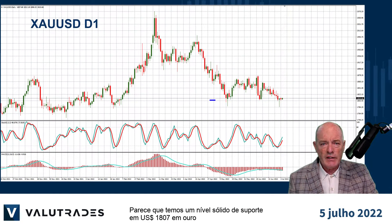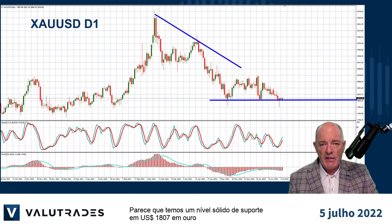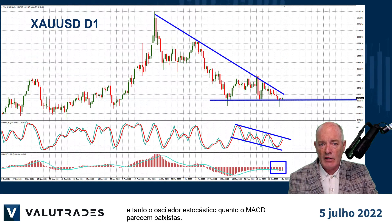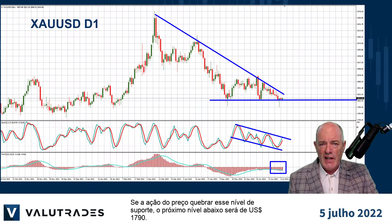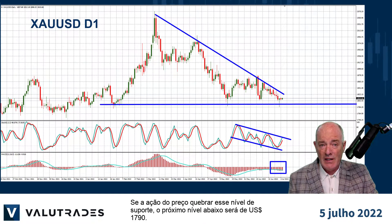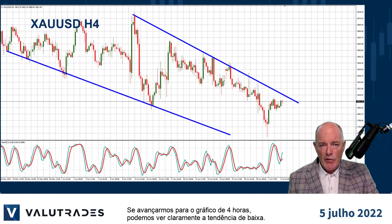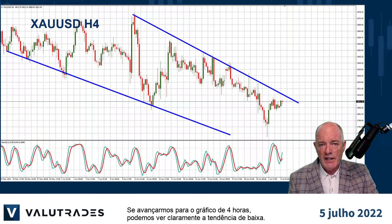We seem to have a solid level of support at $18.07 on gold and both the Stochastic Oscillator and the MACD are looking bearish. If price action breaks this level of support, the next level below is $17.90. If we move into the 4-hour chart, we can clearly see the bearish trend.